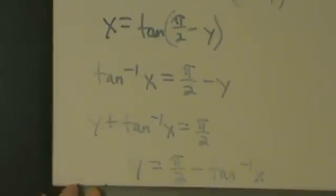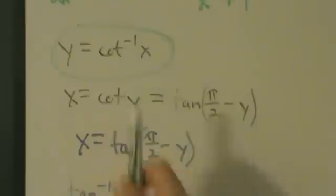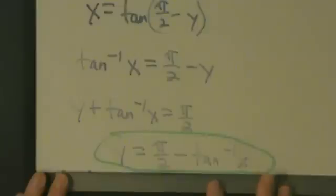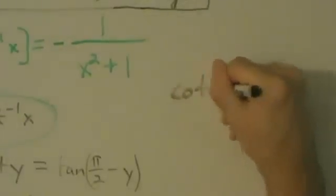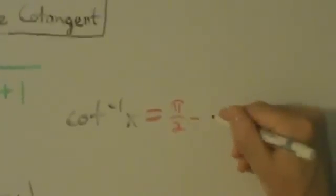Now we have y equals pi over 2 minus inverse tangent of x, and from up here we also have y equals inverse cotangent of x. So both expressions equal y, and by the transitive property, inverse cotangent of x equals pi over 2 minus inverse tangent of x.